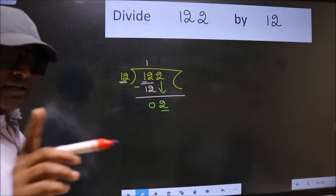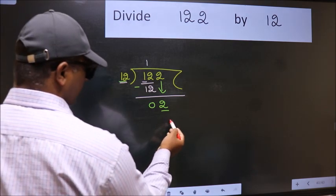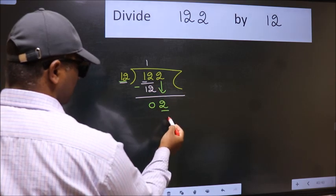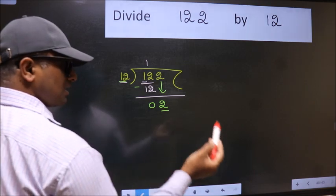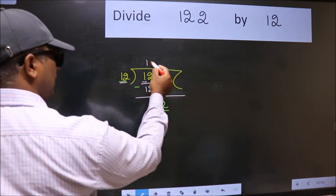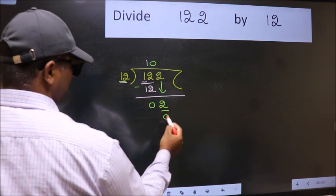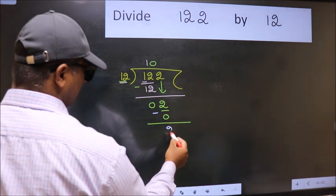Instead of that, what we should think of is which number should we take here. If I take 1, we will get 12, but 12 is larger than 2. So, what we do is we take 0. So, 12 into 0 is 0. Now, we subtract, we get 2.